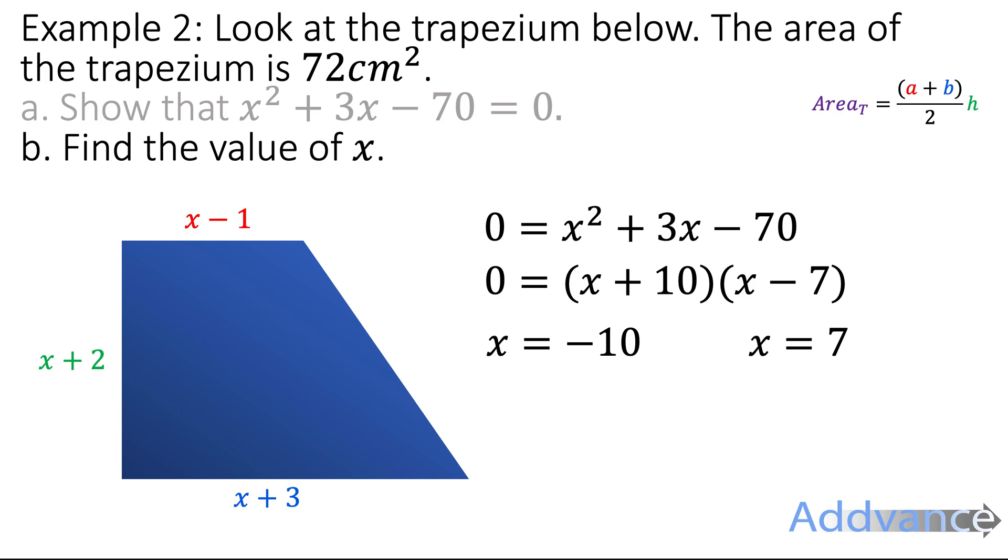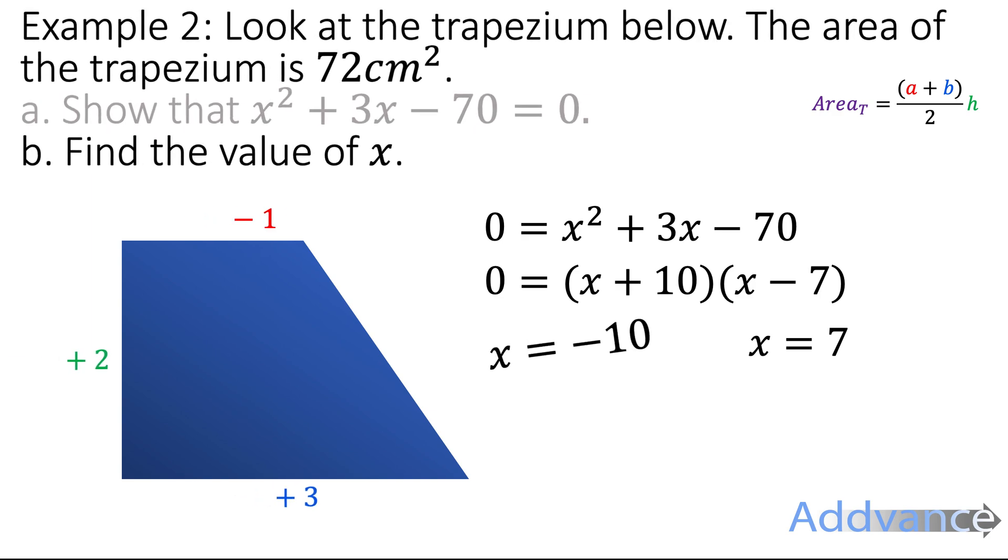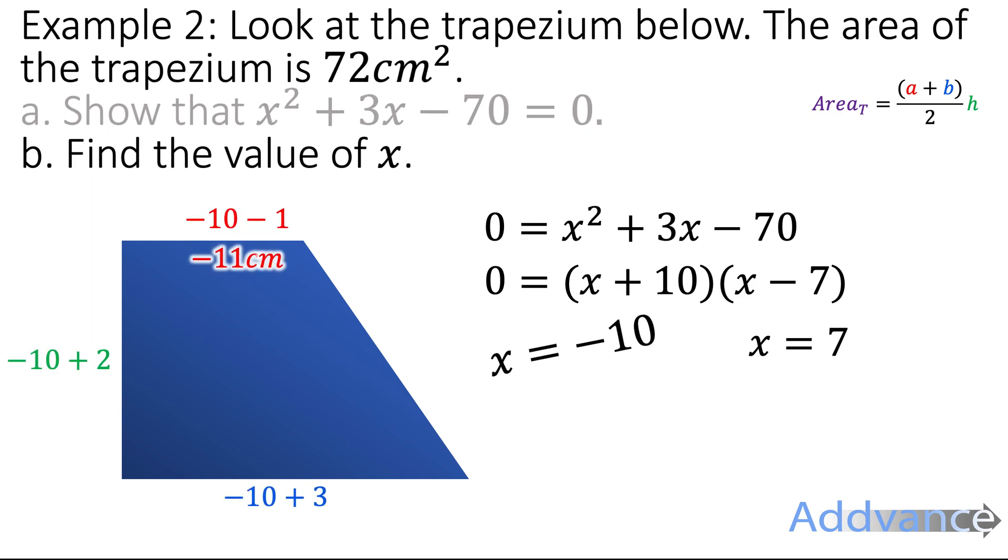And those are the two possible values of x. Now we have to think about which one works. So if x is -10, the top of the trapezium would be -10 - 1, which is -11. And so you would have a length of -11 centimetres. And that doesn't make any sense because you can't have a negative length.